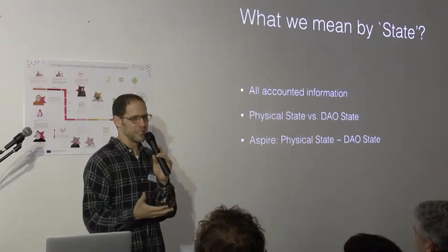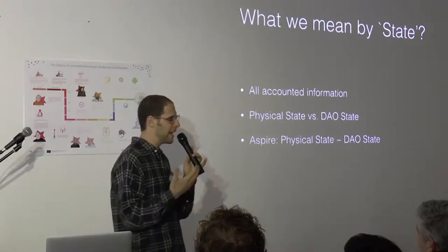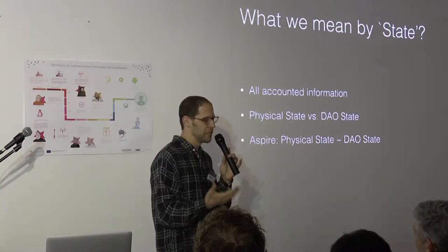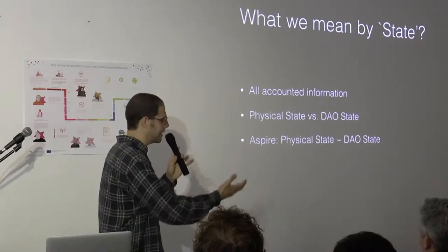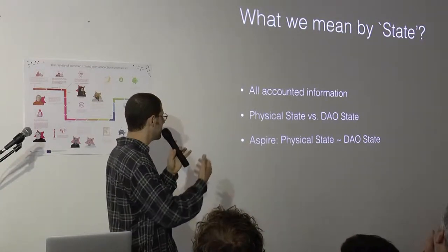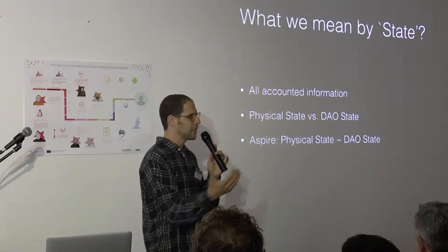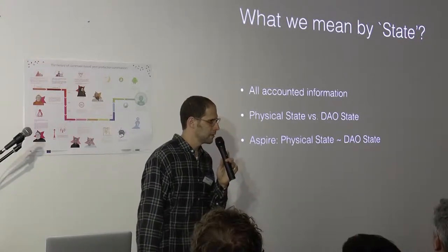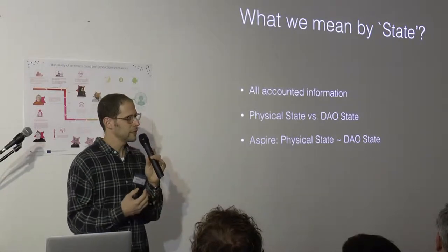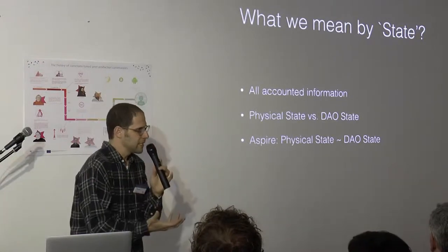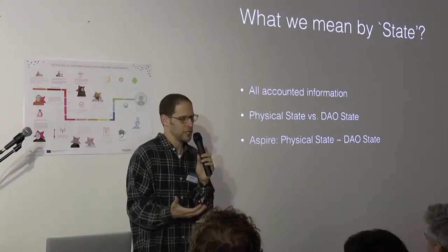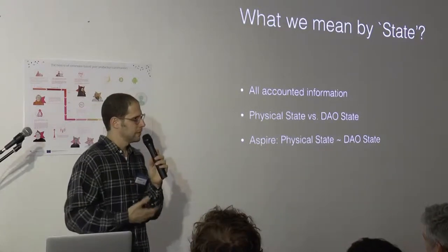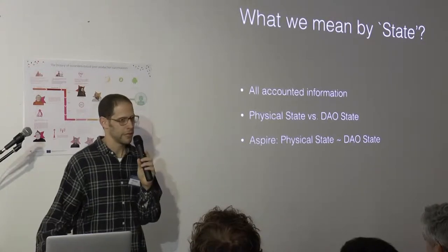If Alice and Bob are enemies, there is more information here that might be valuable for the network. So ideally, you would aspire that this DAO state will be as close as possible to the physical state. Or in another way, the governance machine that you are developing will be able to extract as much information on the reality that it can extract.